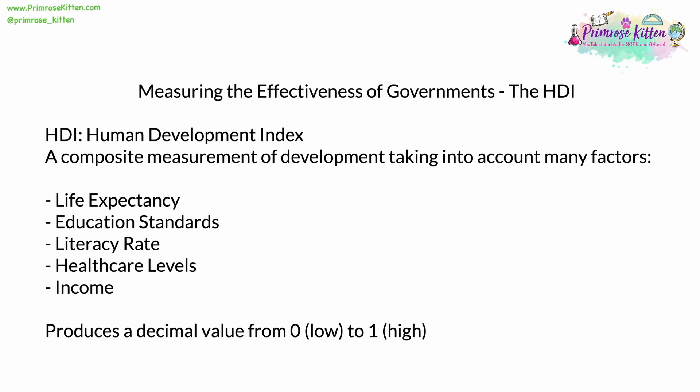The HDI also takes into account things like inequality and how unequal a country is. Combining all of these gives you a decimal value from zero, the lowest, to one, the highest. Many countries get very close to one, although reaching it is almost impossible. Not that many countries get close to zero, the lowest being about 0.35. As a general rule, countries above about 0.75 are considered to be highly developed, countries below 0.5 are considered to have a low level of development, and those between 0.5 and 0.75 fall in the middle.